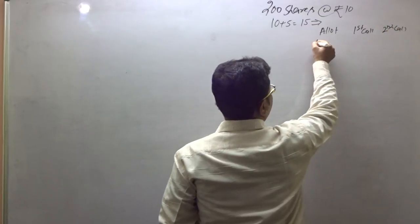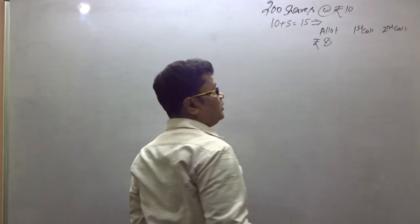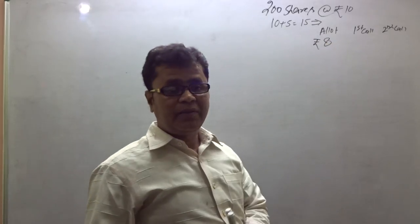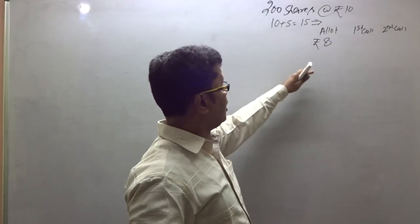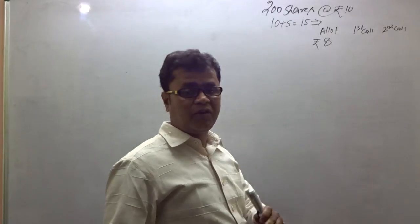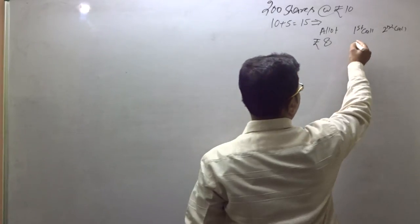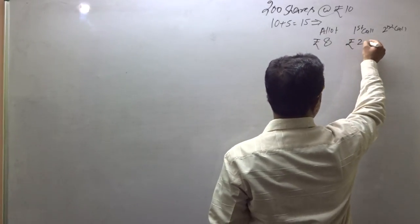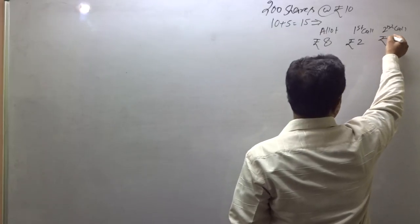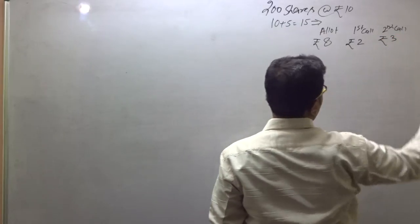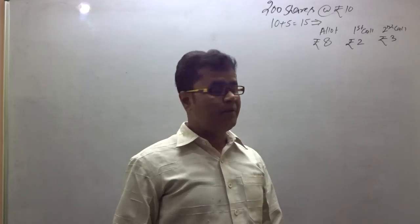The allotment amount was ₹8. First call was ₹2. Second and final call was ₹3. Total number of shareholders: 200 shares. So we have allotment ₹8, first call ₹2, second and final call ₹3.